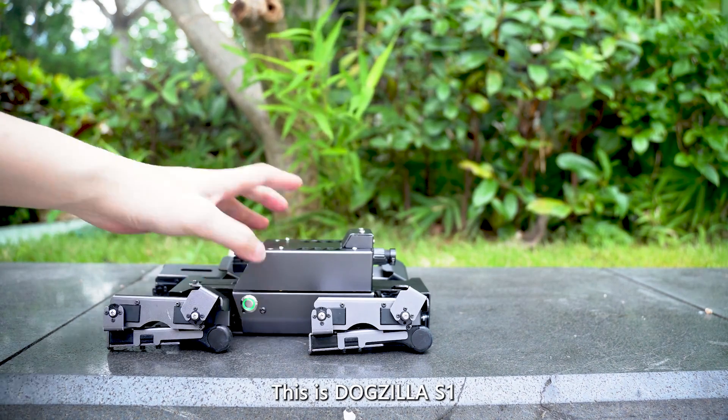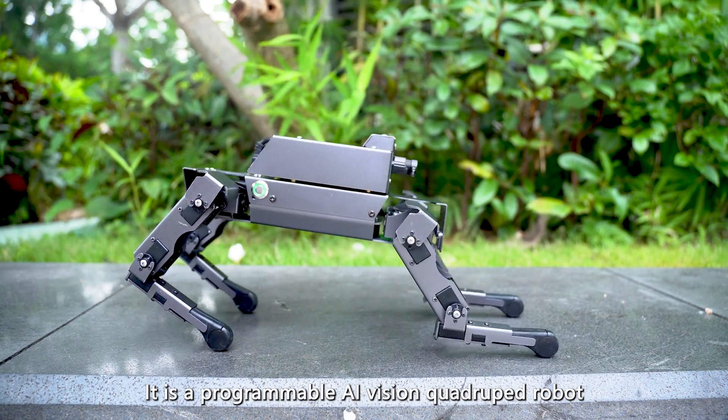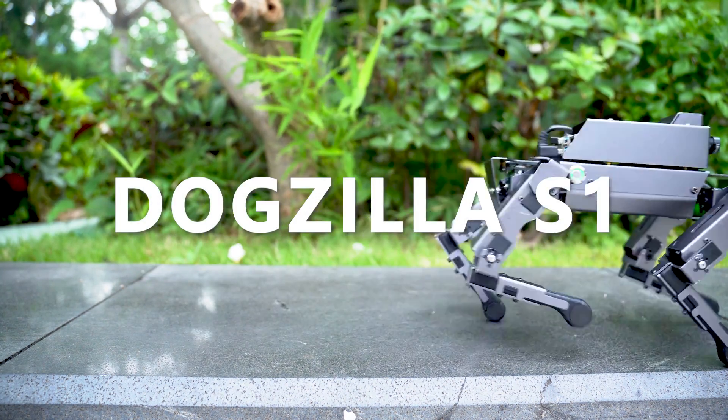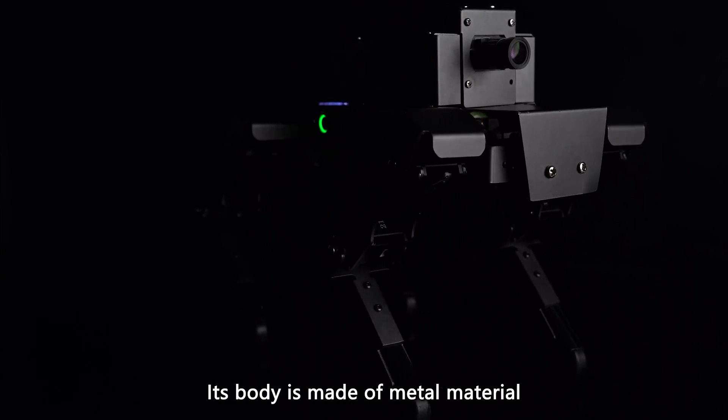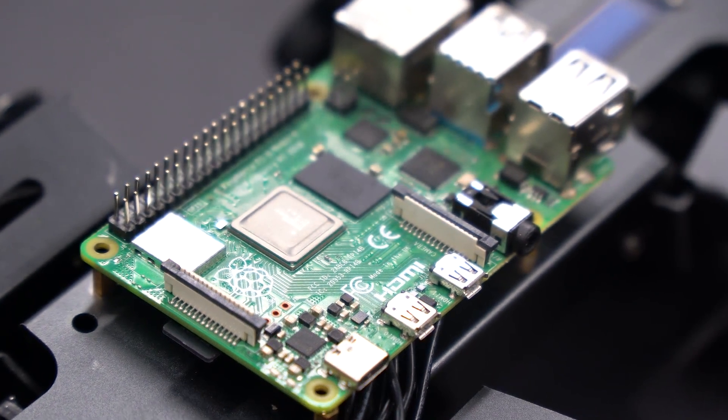This is Dogzilla S1, a programmable AI Vision quadruped robot. Its body is made of metal material and uses Raspberry Pi as the main controller.